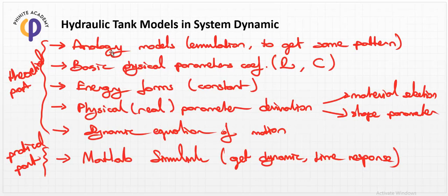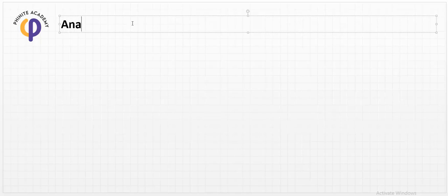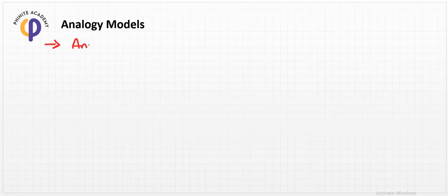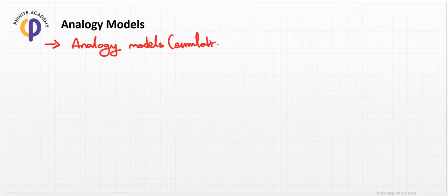In this lesson we will describe analogy models and how to create them, and how to define them in terms of the system dynamics perspective. Today we write the title of this lesson: analogy model. It is defined by the emulation of the physical rules of nature. Emulation here means a physical realization of rules in the universe into computers or mathematics.